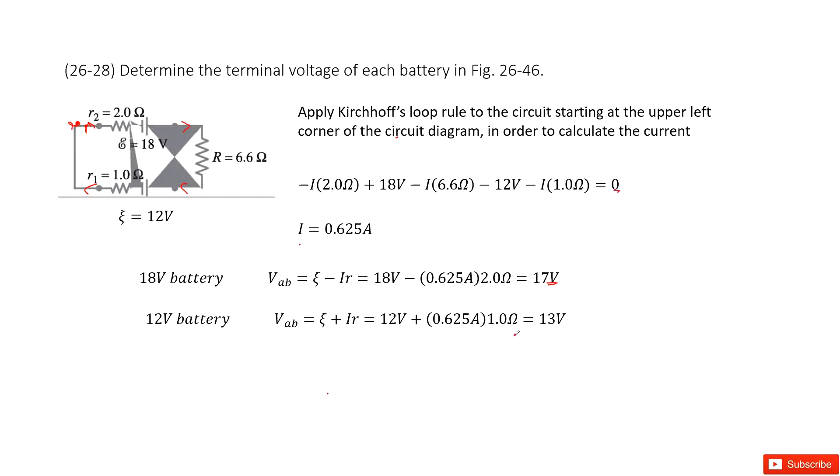And then the next one, we look at the battery for 12 volts. We can see in this one, because the current goes through in the opposite direction, so there is a plus I times R. So epsilon plus I times R, and then we get 13 volts.